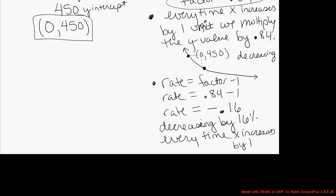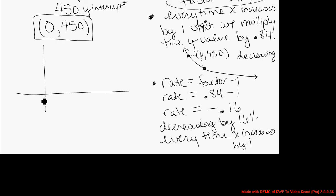Every time x increases by 1, we decrease the y value by 16%. Every time x increases by 1, we multiply the y value by 0.84 — or equivalently, you're taking 84% of the previous y value, which is 16% less than the previous y value. A good window to see this exponential function is from x equals negative 5 up to x equals 20.